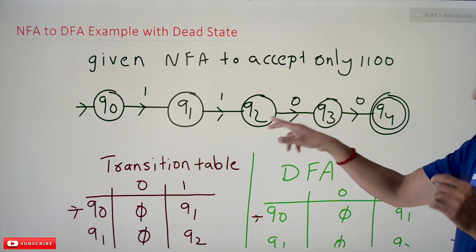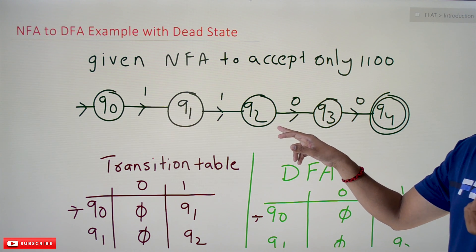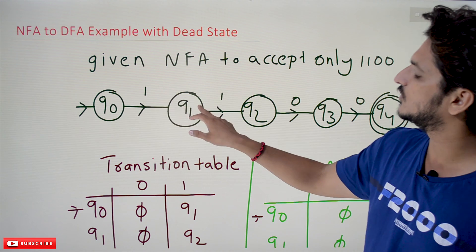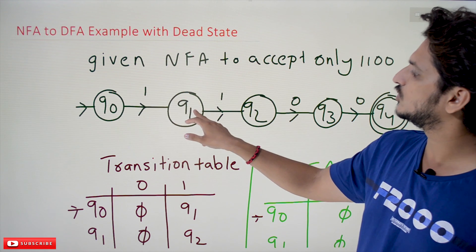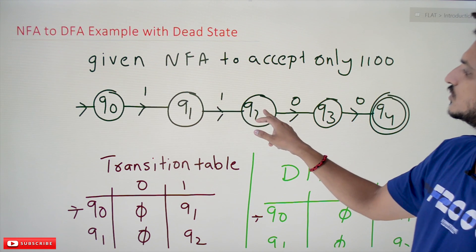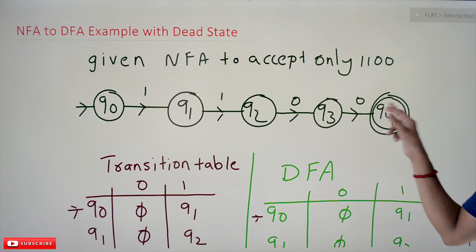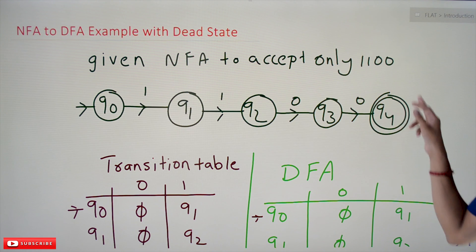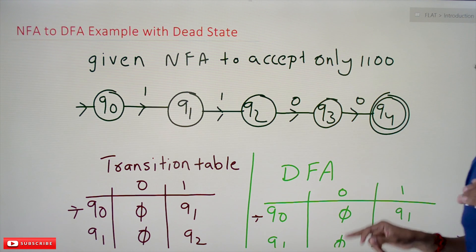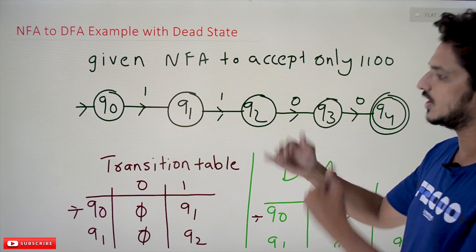The example to construct this NFA was already discussed in our NFA examples class. This is the NFA: from Q0, if you take 1 we move to Q1 state; Q1 moves to Q2; Q2 to Q3; Q3 to Q4 state. If you take 0, 0 we move to the final state Q4.